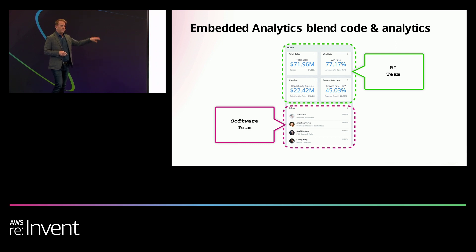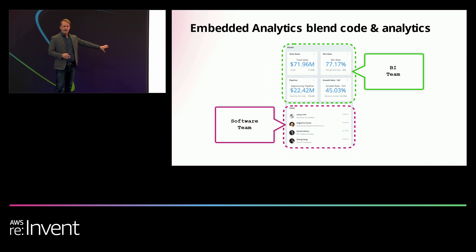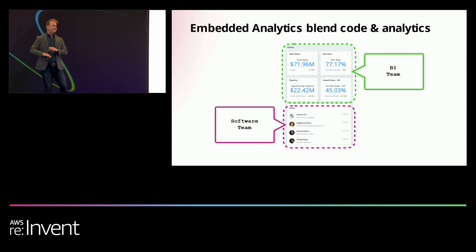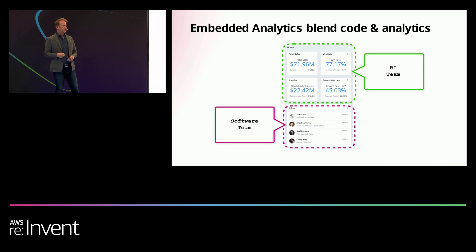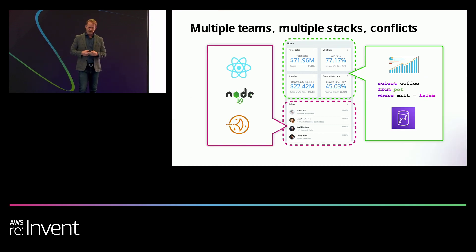This is what it looks like for most people who implement embedded analytics. They get a big chunk of their product developed normally, and then another piece of the product in a completely different system that was never intended to have SCM of any kind — has no way to commit, to roll back, doesn't break changes into logical pieces, may not even have a history mechanism. So how do you bring those two things together?